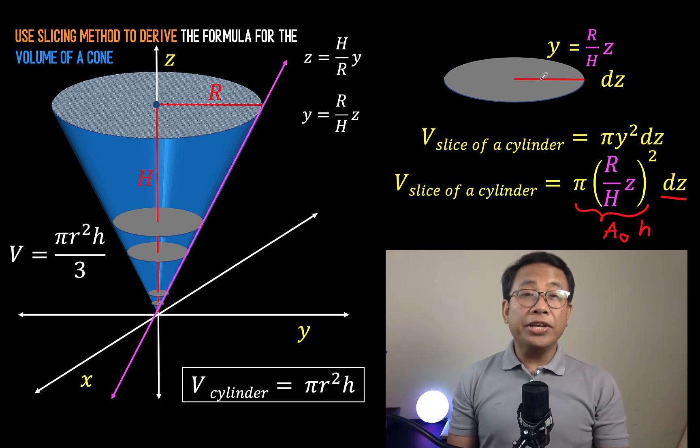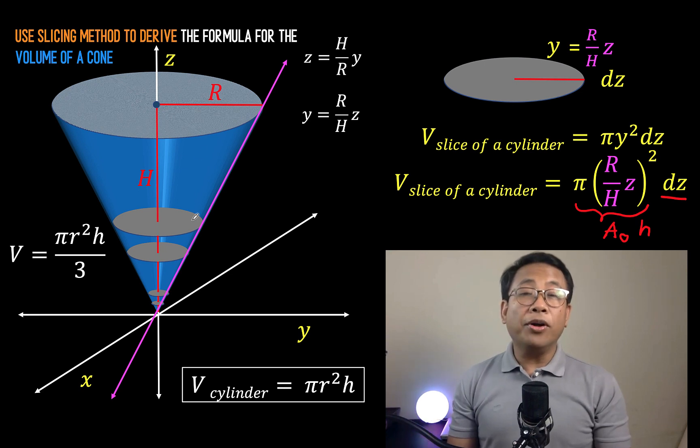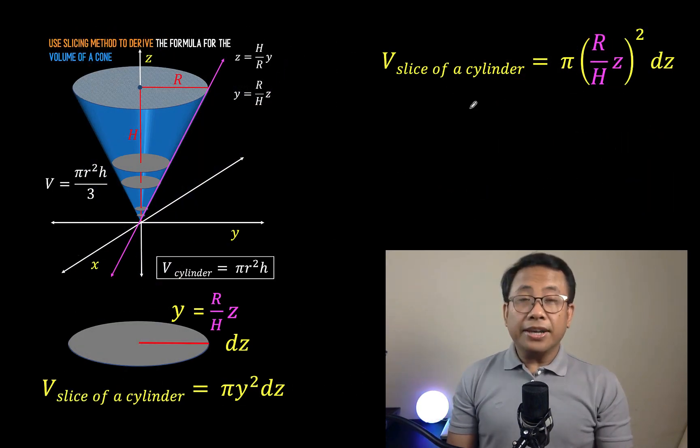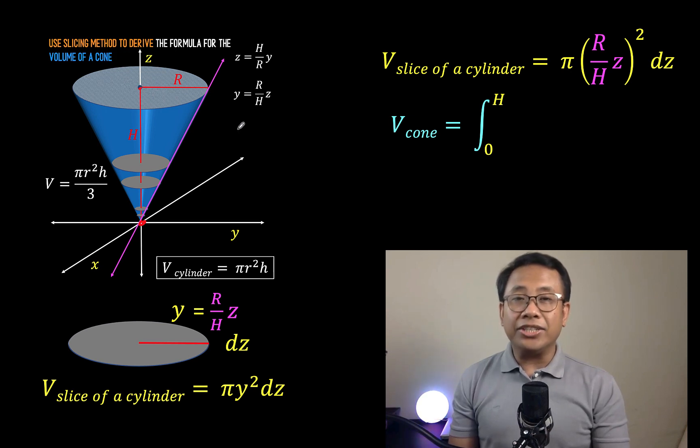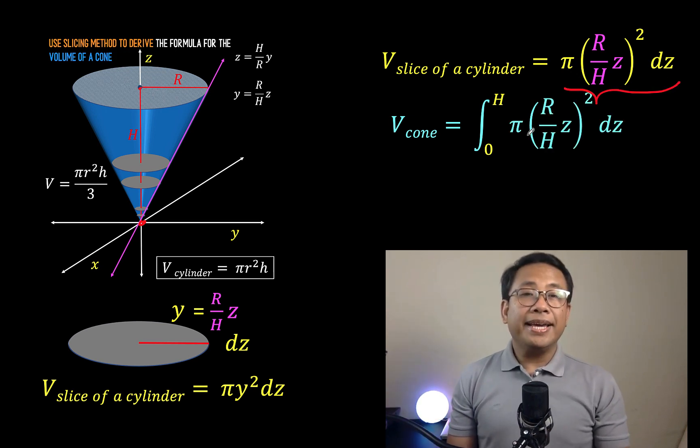So at this point, what we know is just the volume of one disk, and there are infinitely many disks that we can cut from this cone. And we would like to sum up the volumes of all those disks. And in order to sum up all those volumes, we need the concept in calculus, which is called definite integration. So if this is the volume of one slice of a disk, the volume of the entire cone is now given by the integral from z equals 0 to z equals h of this volume pi times the quantity r over h times z squared dz.